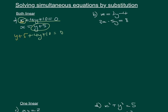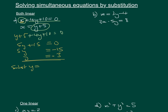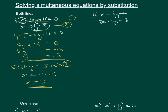Now we solve it like a normal equation. Collecting like terms gives us 5y plus 15 equals 0, so 5y equals minus 15, and y equals minus 3. Then substituting into equation 2: x equals minus 3 plus 5, so x equals 2. Those are our two solutions.